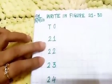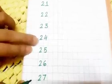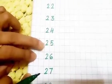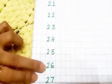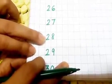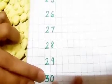So once again we will repeat. First you write 21, 21, then leave the box. 22, 22, leave the box. 23, 23, leave the box. 24, 24, leave the box. 25, 25, leave the box. 26, 26, leave the box. 27, 27, leave the box. 28, 28, leave the box. 29, 29, leave the box. 30, 30.